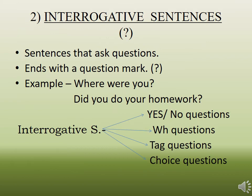The next kind of sentence is interrogative sentences. These are sentences that ask questions, and they always end with a question mark. Examples: 'Where were you?' and 'Did you do your homework?' Again, interrogative sentences are divided into four kinds: yes/no questions, WH questions, tag questions, and choice questions.